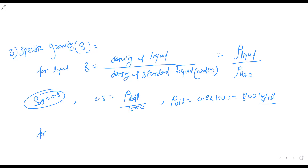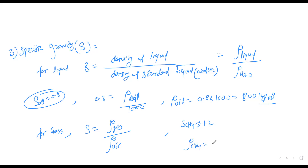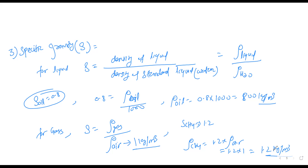Similarly, for the gas case, the specific gravity of a gas is given as the density of the gas divided by the density of air, because air is the standard gas. For example, if the specific gravity of CH₄ (methane) is given as 1.2, then the density of methane is 1.2 × density of air. The density of air is 1 kg/m³, so the density of CH₄ is 1.2 kg/m³. Remember: the standard liquid is water and the standard gas is air.